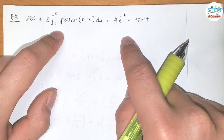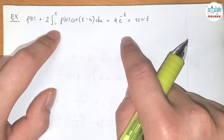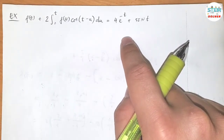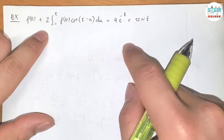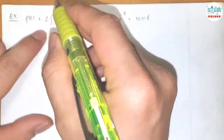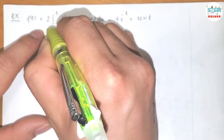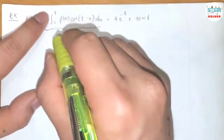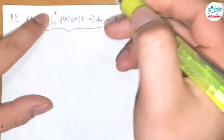The easier way to do it is to convert it using the convolution theorem. If you recall, this is a different way of writing the product — you have the function times u and the function times t minus u.